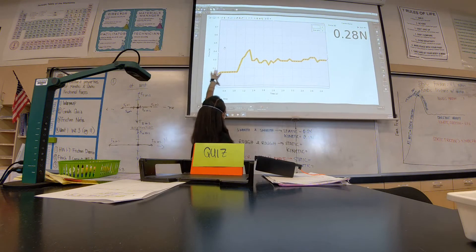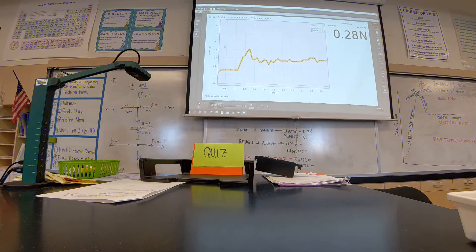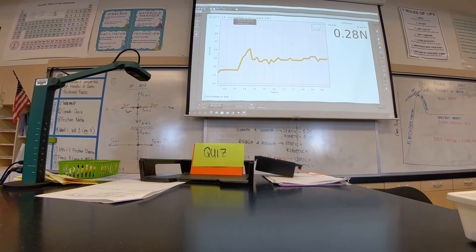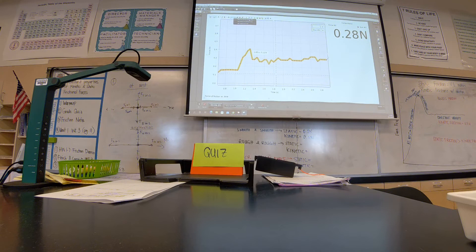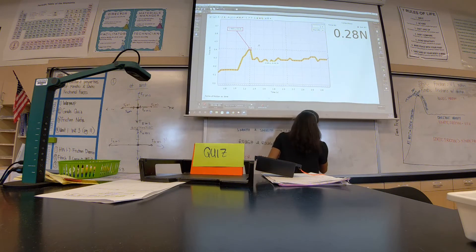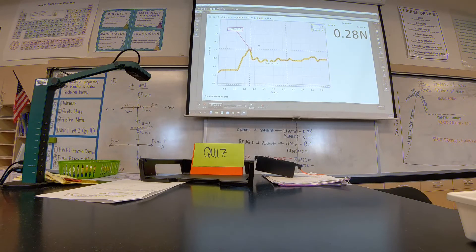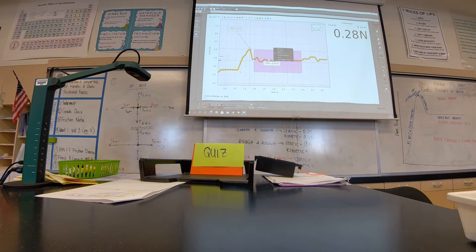We've got a little error since it should start at zero and doesn't, but we get a good idea of the pattern. For more rough surfaces, what do you think happens to the static and kinetic friction values? They're going to increase. The more rough your objects are, the greater the frictional values. This max point here: I have 0.4 newtons for two rough surfaces. And the average in the constant velocity section is 0.3 — a definite increase, up by 0.2 from the two smooth surfaces.